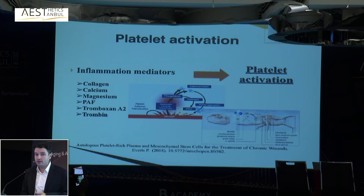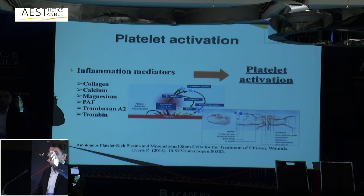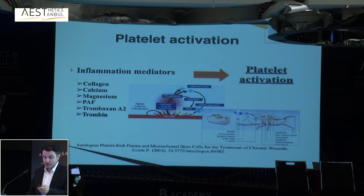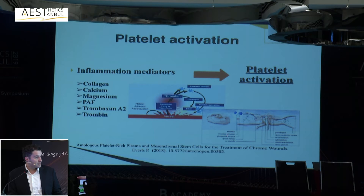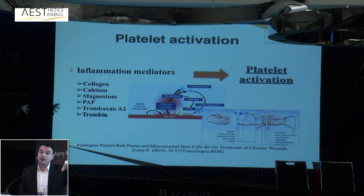Activation can be mechanical or chemical. Whatever chemical activator you use, the final cascade is thrombin-mediated platelet activation. Thrombin, whatever pathway you stimulate, ultimately activates the platelets. As shown in this photo from Professor Peter Everts, platelets are round cells circulating in blood. When activated, they extend pseudopods, bring granules to the site of inflammation, and those granules release growth factors.